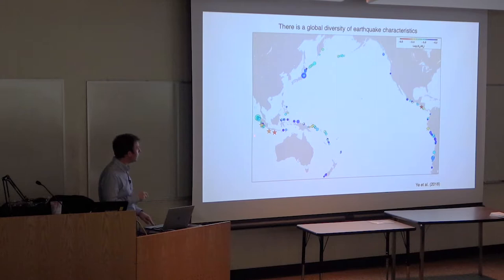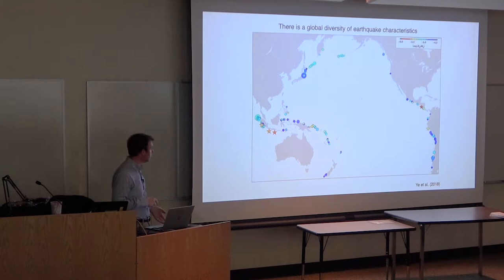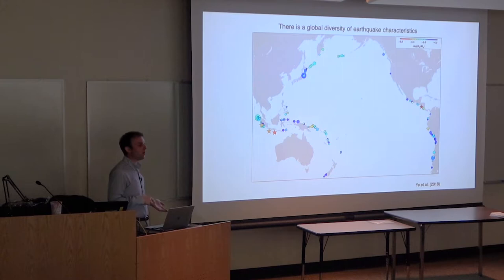Here's a global map of earthquakes colored by the ratio of radiated energy to moment - a normalized measure. We see a global diversity of earthquake characteristics: tsunami earthquakes that radiate very little energy and tend to be long period, and outer rise events that produce very high frequency excitation. There must be properties of the faults themselves that are controlling this diversity.